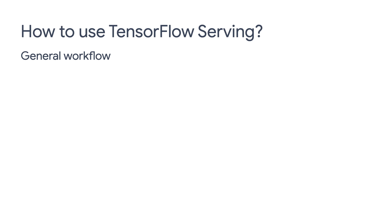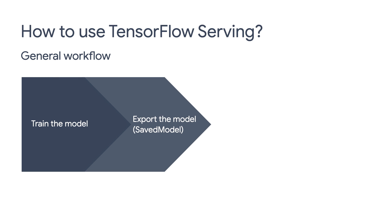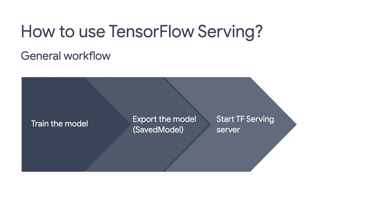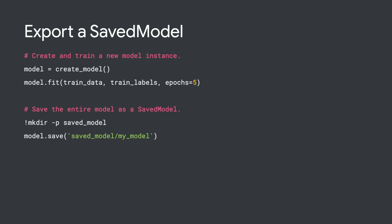So how do we actually use TF Serving? The general workflow consists of four steps. You train your model with TensorFlow, export your model using saved model format. Then you can start a TF Serving model server. And lastly, you make requests to the serving server via REST or gRPC. Let's see it in action. You can use the model.fit method to train your model. Once the training is done, you can use the model.save method to export the model as a saved model.